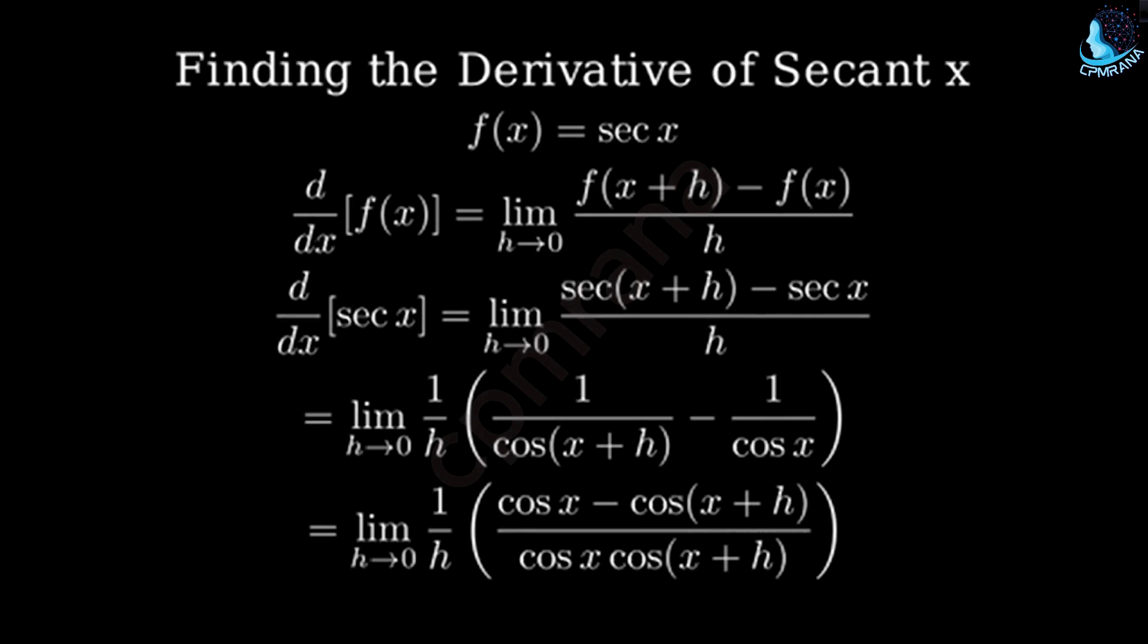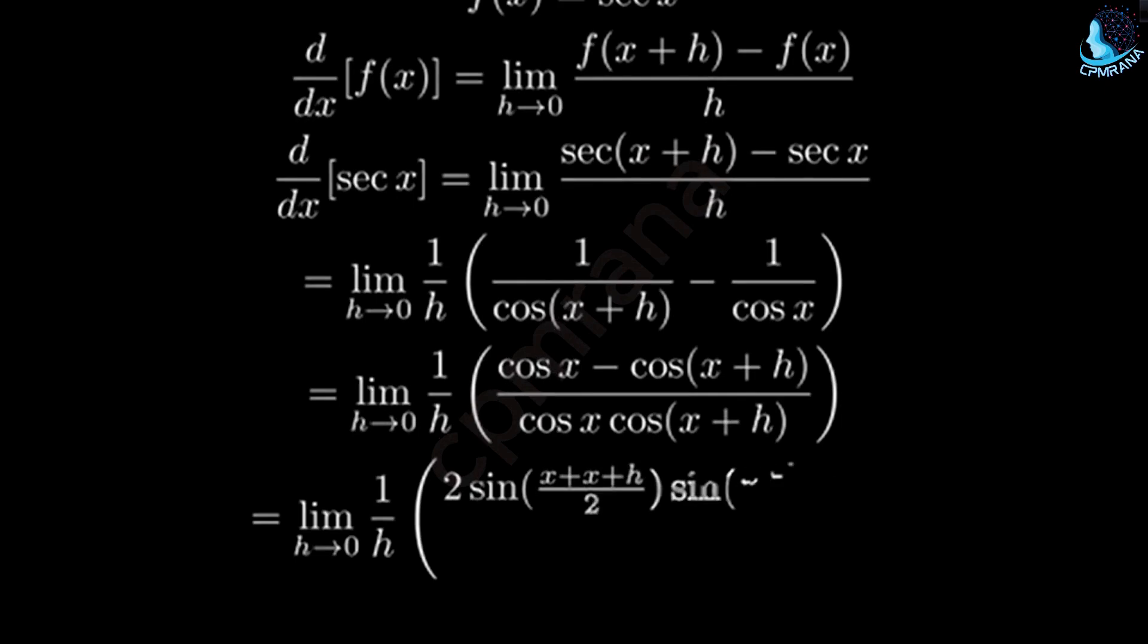Now comes the key step. We can use the cosine difference formula, which states that cos a minus cos b equals negative 2 times sin((a+b)/2) times sin((a-b)/2).